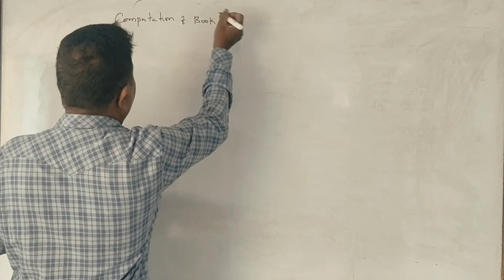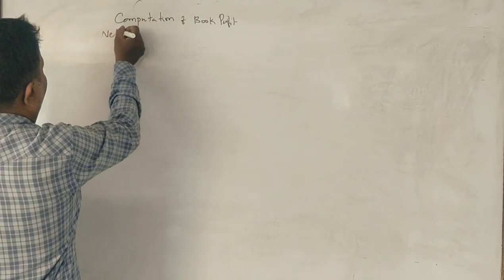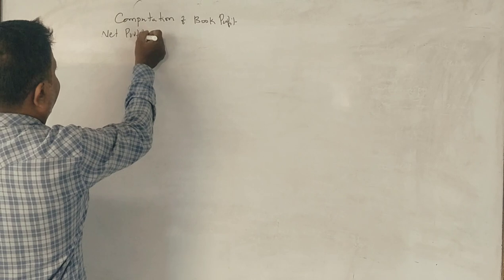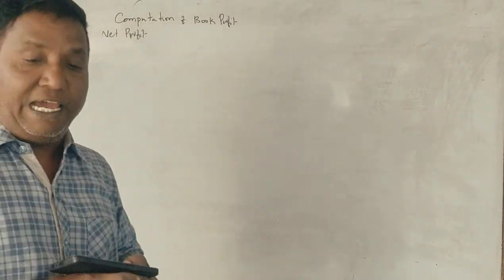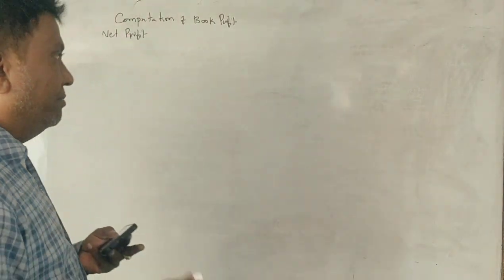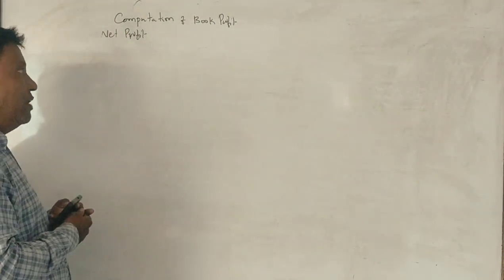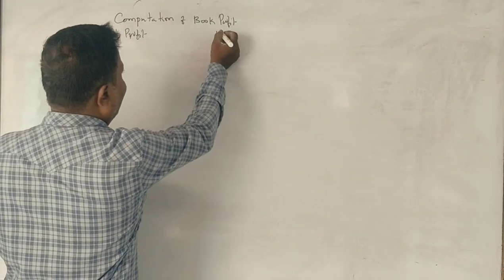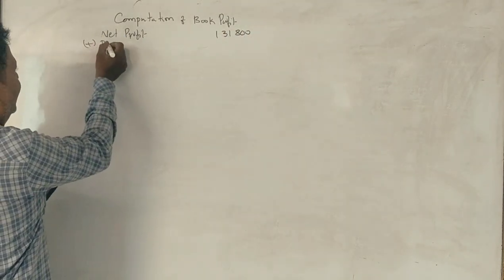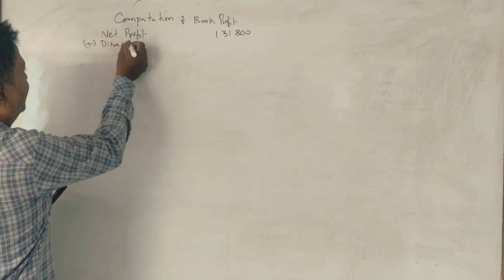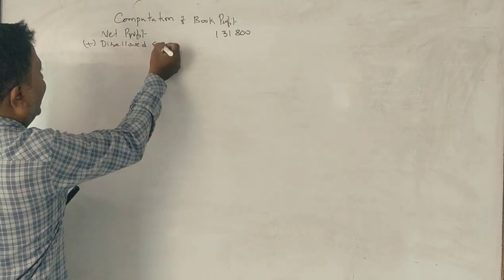Book profit. See, net profit after allowing all the items - salary, interest on capital and commission - Rs. 1,31,800. So, disallowable expenses are disallowed expenses.